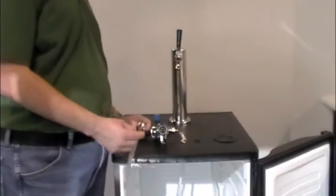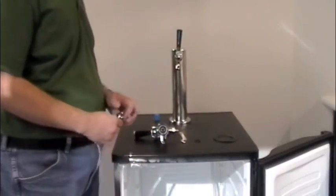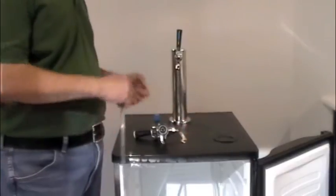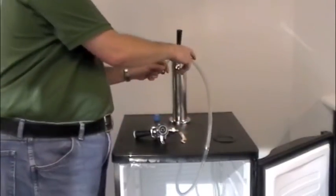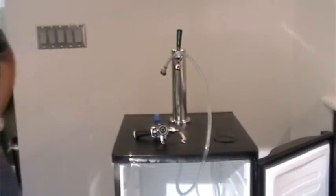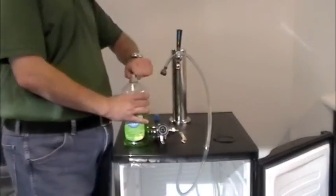We're going to grab our tower line, the one with the nut that's already pre-attached. And what we're going to do is we're going to grab our bottle of dish soap and here's where the magic happens.